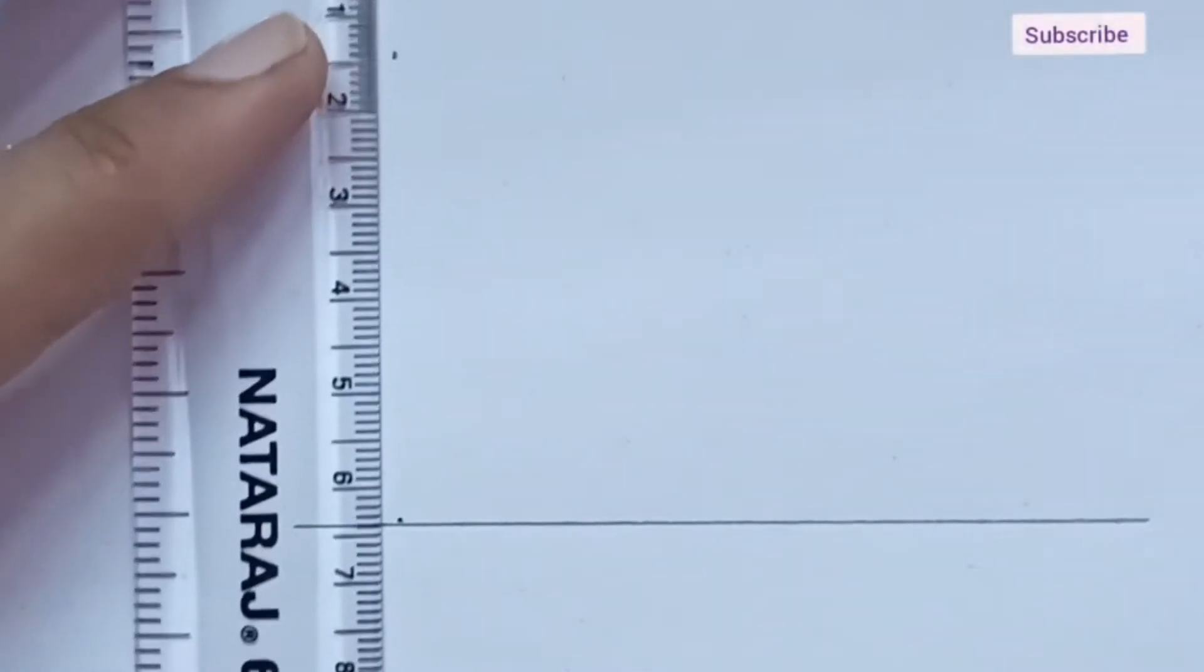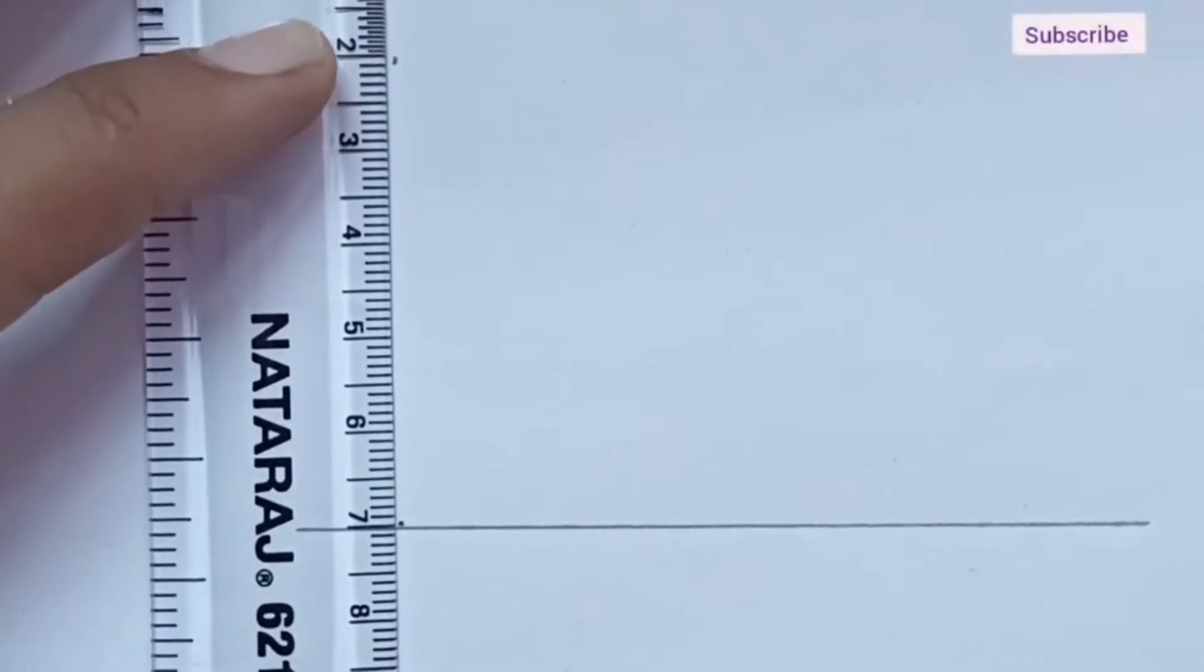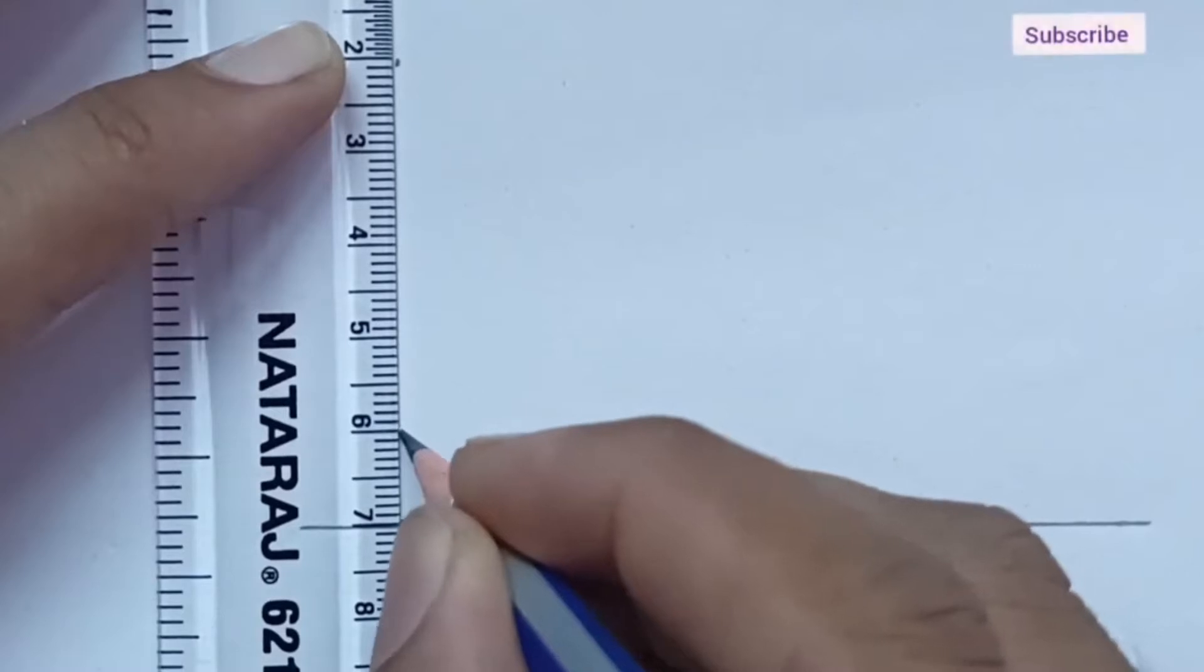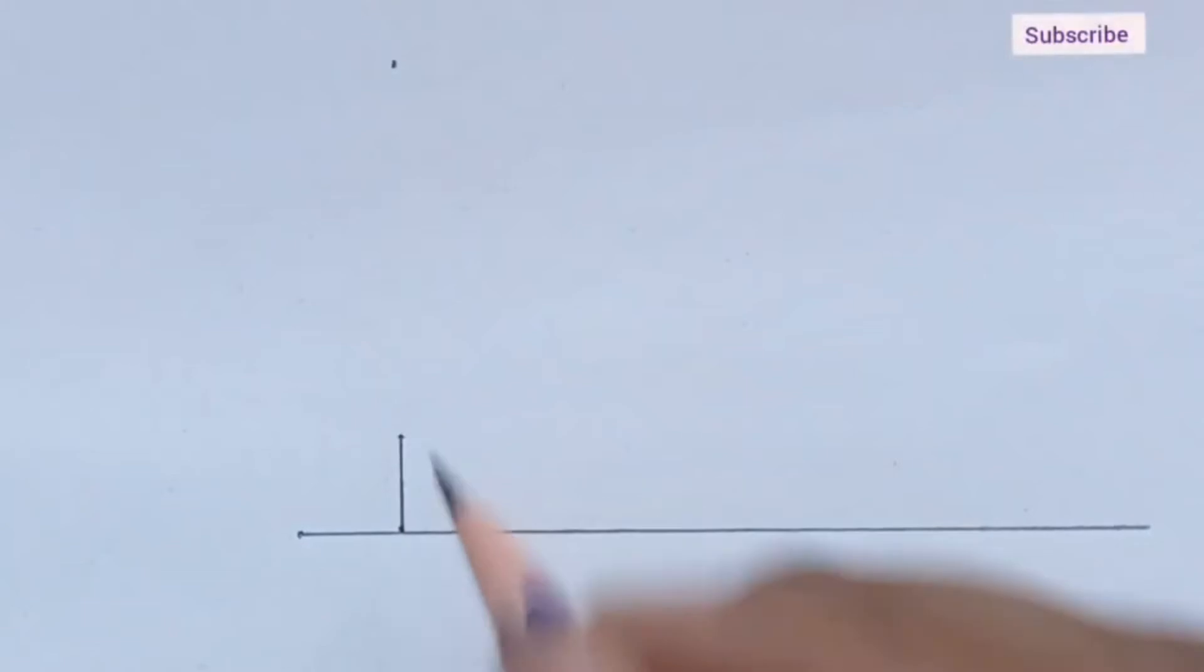On perpendicular, we need 1 cm line. This one 1 cm line. Join both these points.